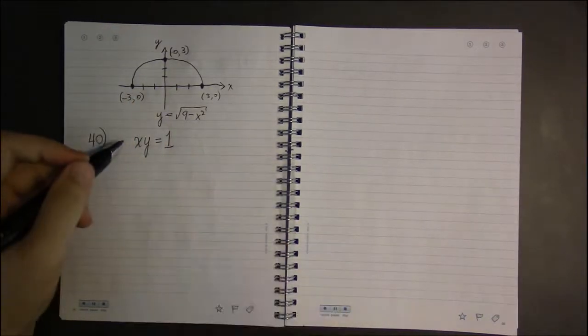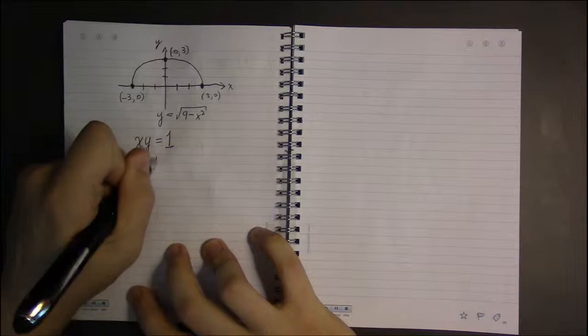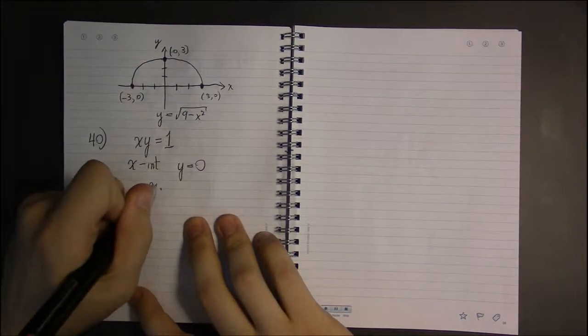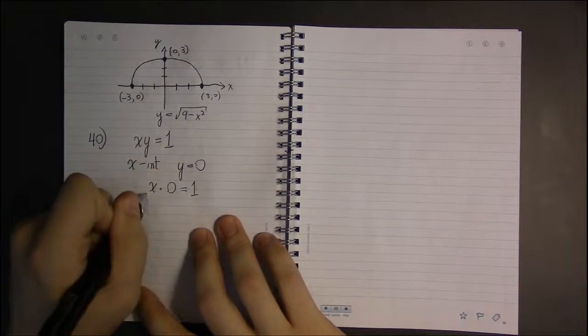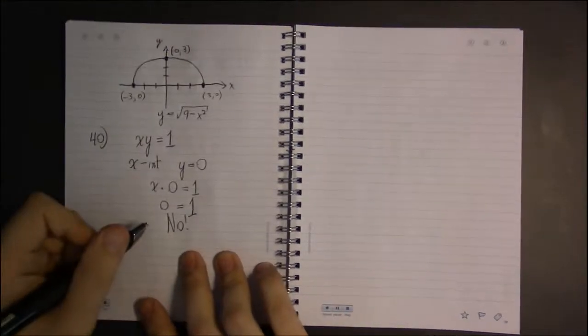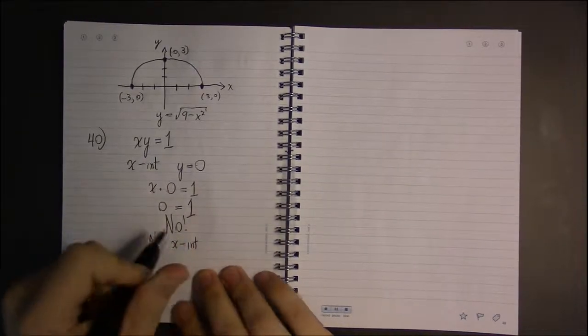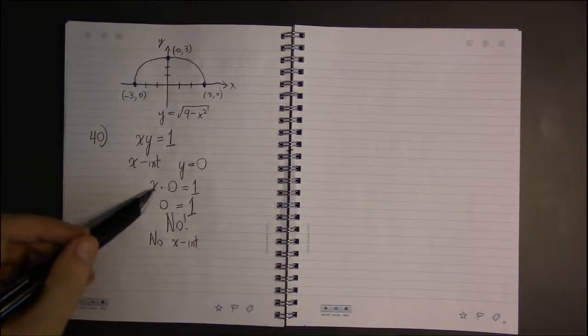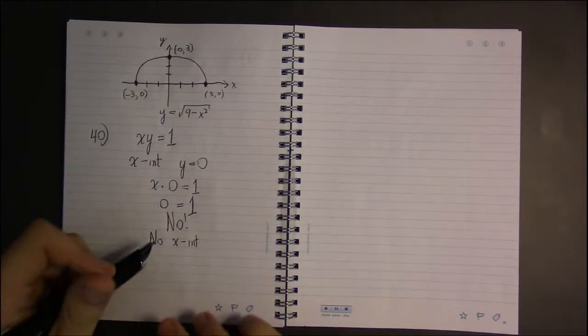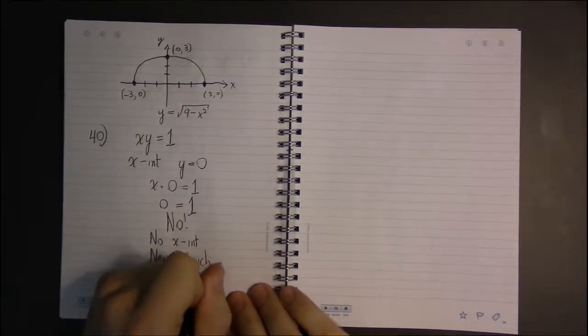One more quick final example. This is going to illustrate that graphs don't have to have an x-intercept. They don't have to have y-intercepts. Because for the x-intercept, we set y equal to 0 and solve. So we have x times 0 equals 1. x times 0 is just 0. And 0 is clearly not 1. So there are simply no x-intercepts. If y equals to 0, this equation can't be true because we end up with a false statement. So it's never going to be the case that it hits the x-axis. This will never touch the x-axis. So it has no x-intercepts.